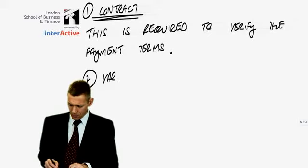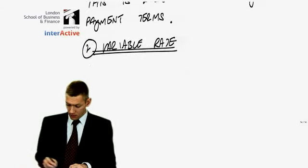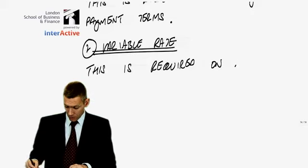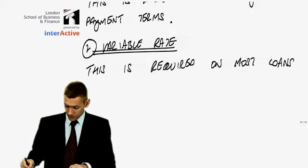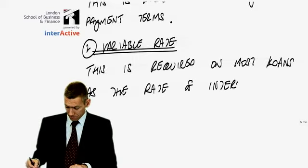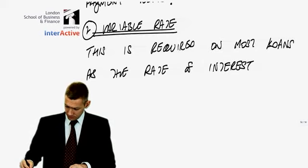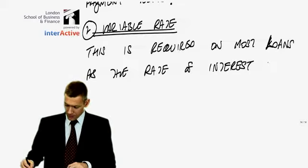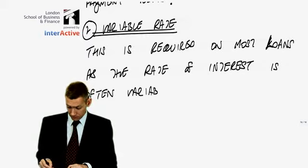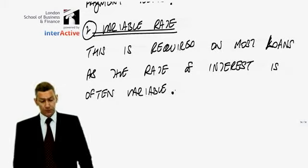How about this one? The variable rate. This is required on most loans as the rate of interest is often variable. And, therefore, it might be one rate for six months and another rate for the other six months. Yeah, great. So, that's that. On to part B, part two.